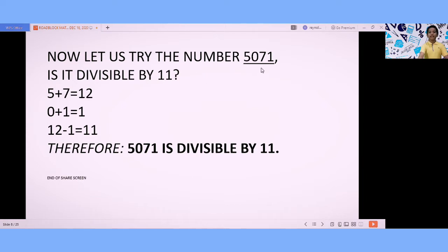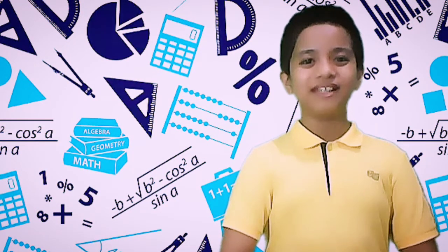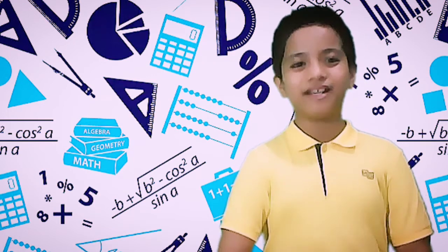Let us try the number 5071. 5 plus 7 — because they are on the odd places — is 12. 0 and 1 are on the even places; their sum is 1. 12 minus 1 is 11. Since 11 is divisible by itself, therefore 5071 is divisible by 11.